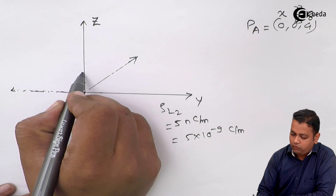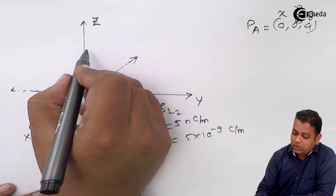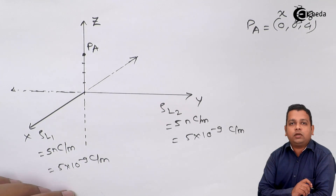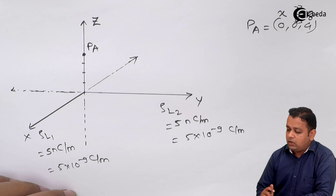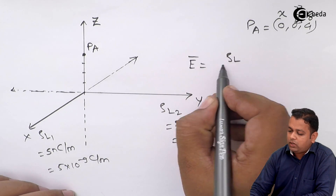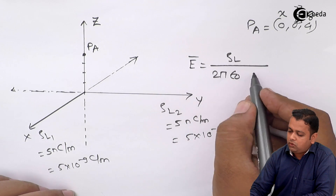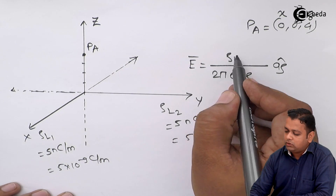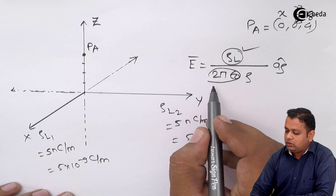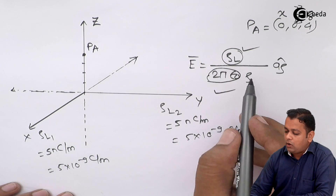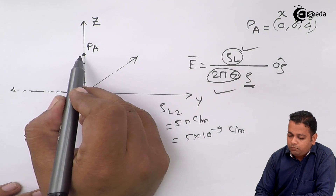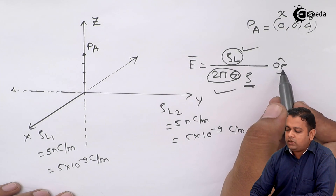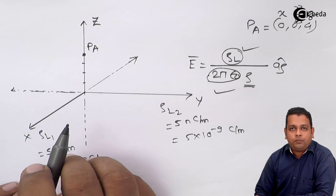We move 4 units along the z-axis to locate point PA. To find the electric field intensity at PA due to these line charges, we use the formula: E bar = rho_L / (2π ε₀ ρ) × A_ρ cap. We have the values of rho_L1 and rho_L2, and the constants 2π ε₀. Here ρ is the perpendicular distance from the field point to the line charge, and A_ρ cap is the radially outward unit vector along that perpendicular.